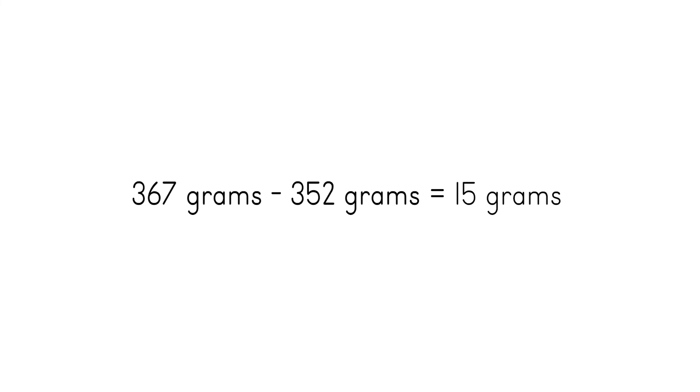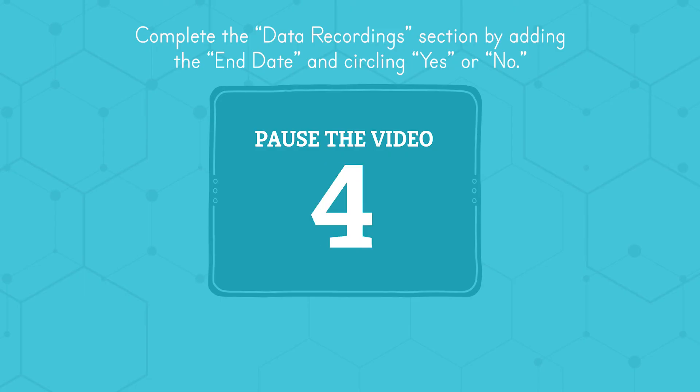Does this number match up with our beginning salt weight? Yes. We started out with 15 grams of salt. Finish off your student journal page by adding the end date and circling yes or no in the data recordings chart. What happened in our experiment? When we mix the salt with the water, the salt dissolved and it seemed to disappear. But as you can see in the dish, it didn't. The water evaporated as the dish sat, but the salt was left behind. That's all for today.